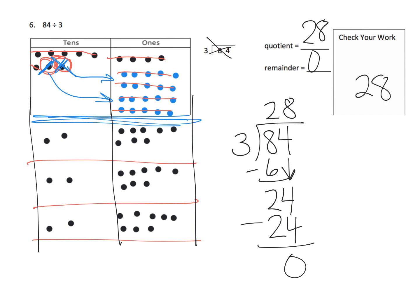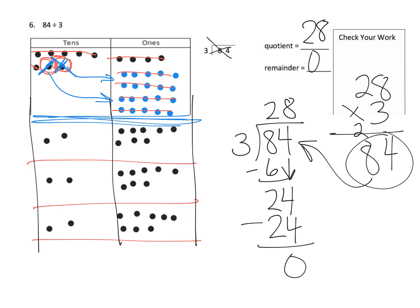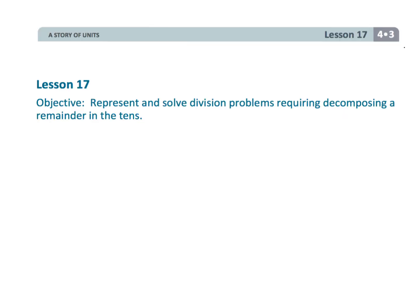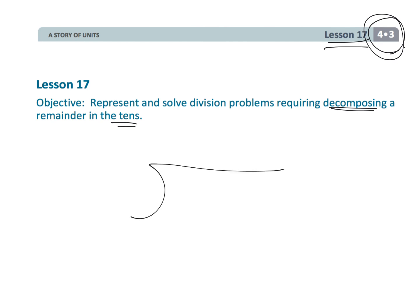Checking: 28 times 3 — 3 times 8 is 24, carry the 2; 3 times 2 is 6 plus 2 is 8 — that's 84, exactly what we started with, confirming we are correct. That wraps up fourth grade module 3 lesson 17, where students are required to decompose a remainder in the tens column, still marching towards the standard algorithm.